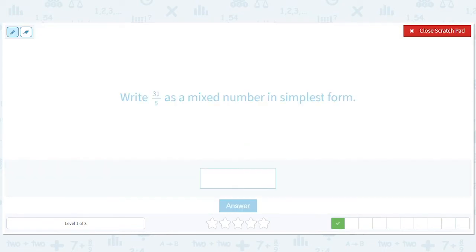31/5. So same thing, 31 divided by 5. Goes in 6 times. I have 6 and 1/5.